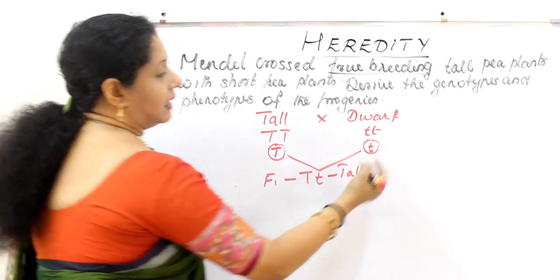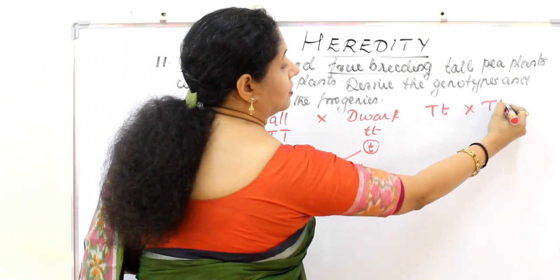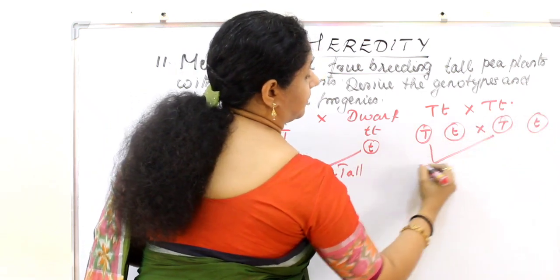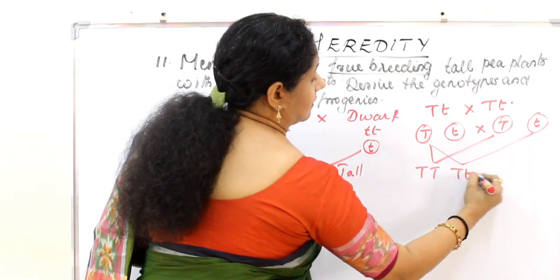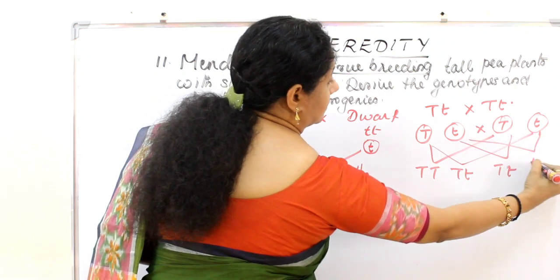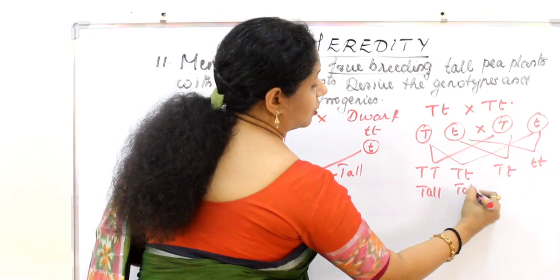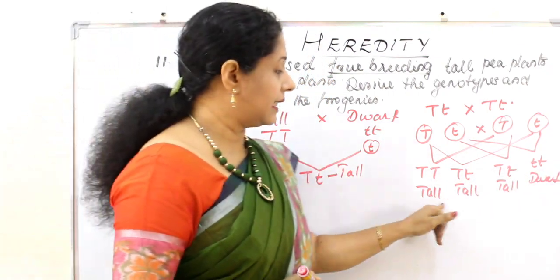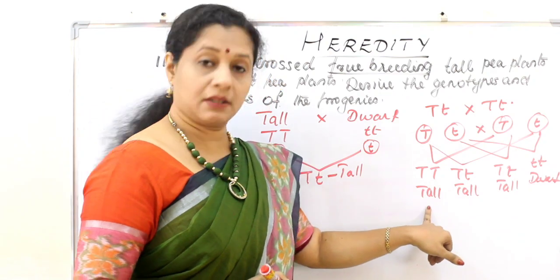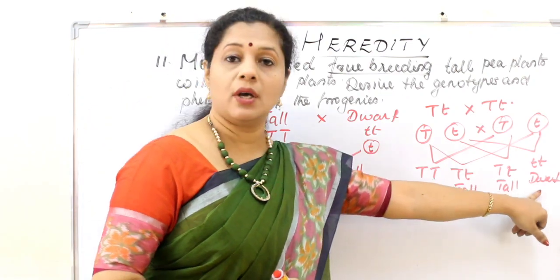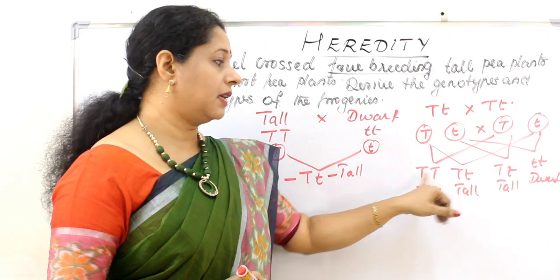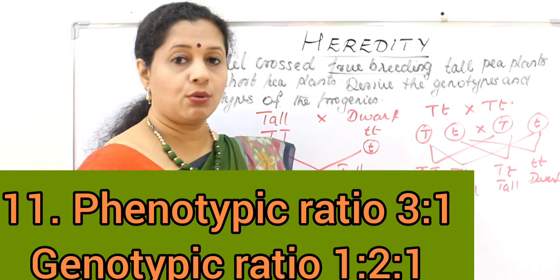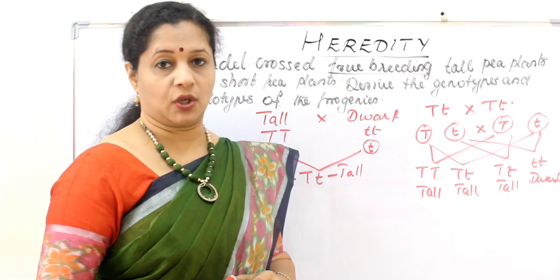The F1 generation is all tall. When F1 tall plants are crossed with each other, you get: three tall and one dwarf in the F2 generation. That is the phenotypic ratio of 3 to 1. The genotypic ratio in the F2 progeny is: capital T capital T (1) to capital T small t (2) to small t small t (1) — that is 1 is to 2 is to 1.